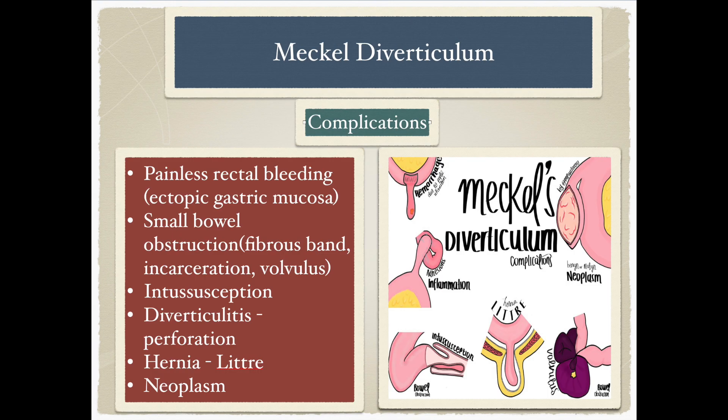It can present with several complications. The most common is painless rectal bleeding from ectopic gastric mucosa. Small bowel obstruction can occur because of a fibrous band, volvulus, or incarceration. Sometimes it can act as a lead point for intussusception. Inflammation of the diverticulum can lead to diverticulitis and perforation. It can herniate as a Littre's hernia, and rarely you can have a neoplasm.